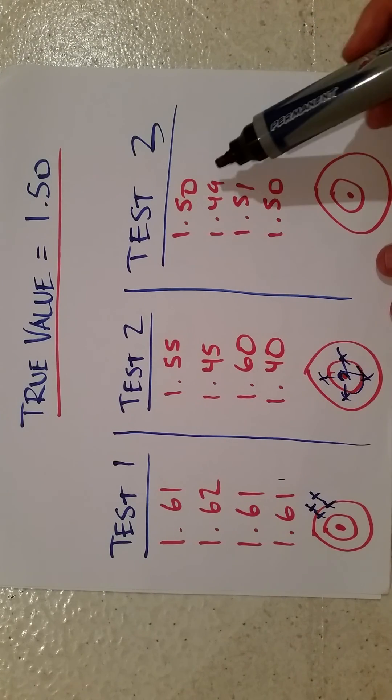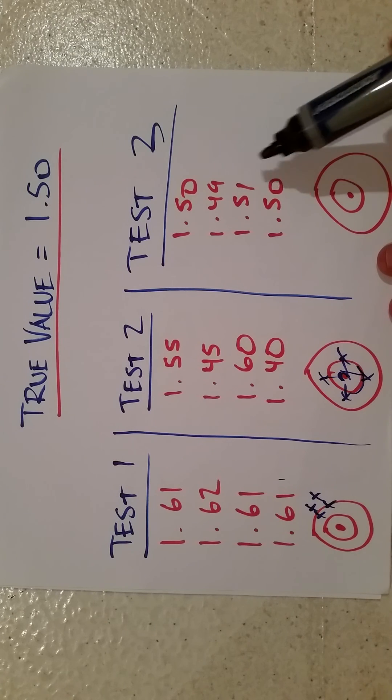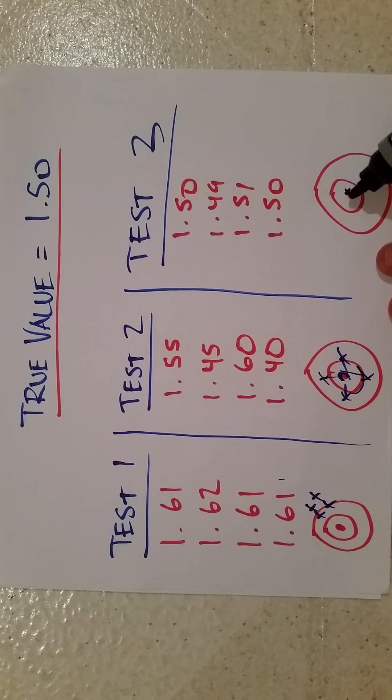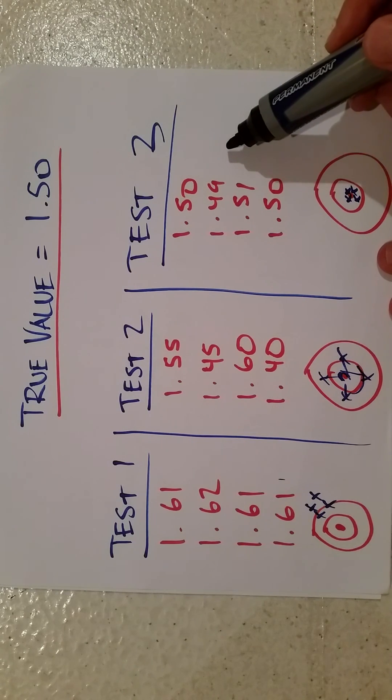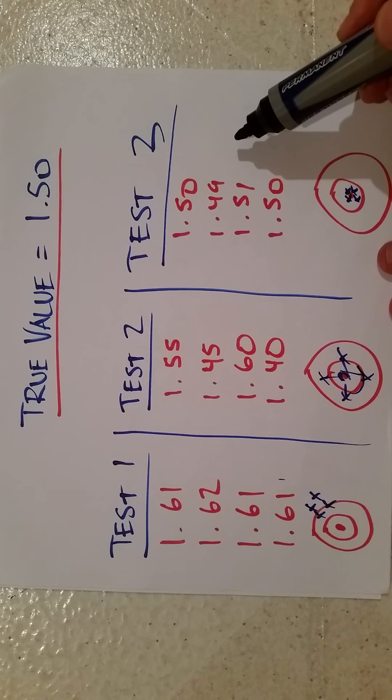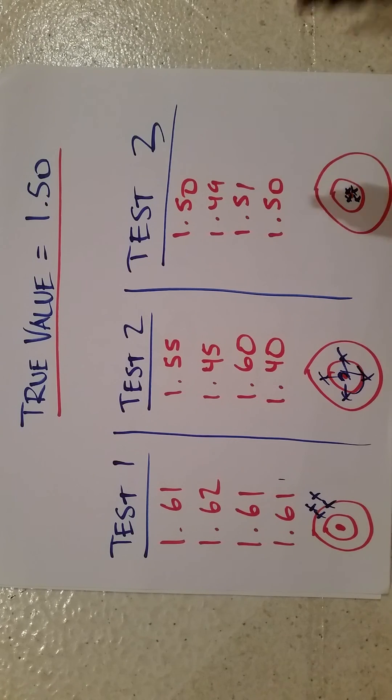Test three: 1.50, 1.49, 1.51, 1.50. On the bullseye, this is going to look like a tight grouping around the bullseye. Thus, test three is the most accurate and it's the most precise. And that is a quick introduction to accuracy versus precision.